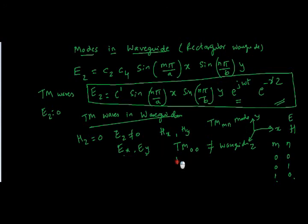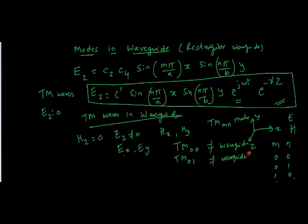Let's see what will happen when TM takes 0 and 1, that is n equal to 1, m equal to 0. If you try substituting that, you can see that all the field components will vanish again. For example, Ez will vanish because of sin(0), so TM01 also does not exist in the waveguide. Next is TM11. When m equal to 1 and n equal to 1, Ez will exist and there will be a few more fields which exist in the waveguide.